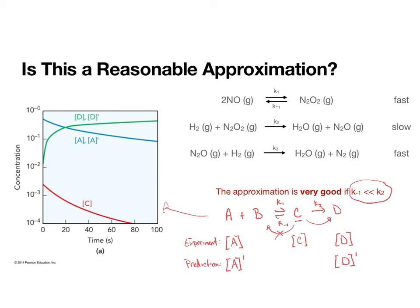And on this graph, there is really only one set of lines. And so that tells us that our prediction of our concentrations is very, very good if K minus 1 is less than K2.